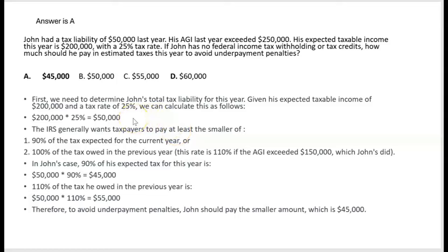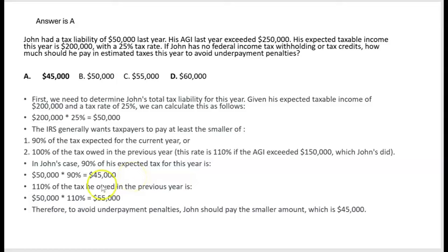Now that we've estimated 100% of his current year tax liability at $50,000, the IRS generally wants taxpayers to pay the smaller of: 90% of the expected current year tax — that's $45,000 — or 100% of the tax owed in the previous year. However, this rate is actually 110% if the AGI exceeded $150,000, which John's did. So John might have to pay 110% of last year's tax. 90% of this year's tax is $45,000, but 110% of last year's $50,000 is $55,000.